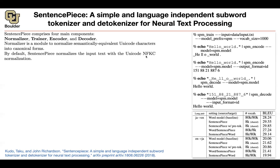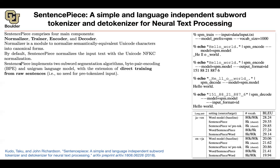By default, SentencePiece uses Unicode NFKC normalization — you can Google that and find YouTube videos or blog posts on it. The idea is to turn a messy internet sentence into something normalized for training. For the training process, you have multiple options for subword segmentation: byte-pair encoding, which we covered last session, and the unigram language model, which we're going to cover today.